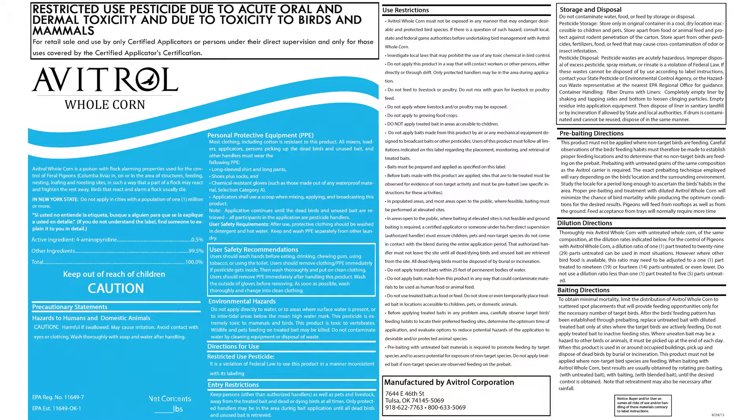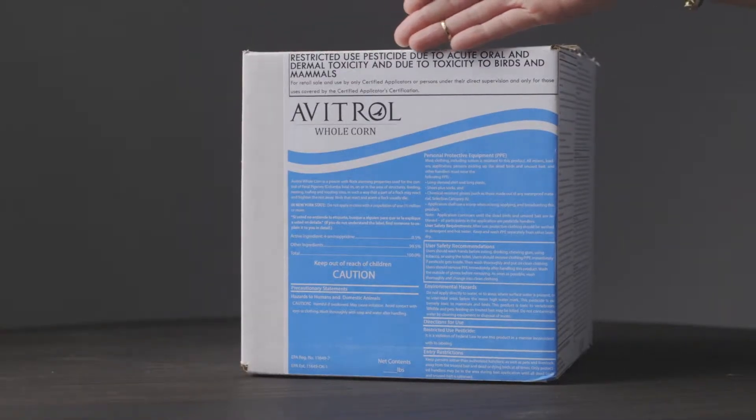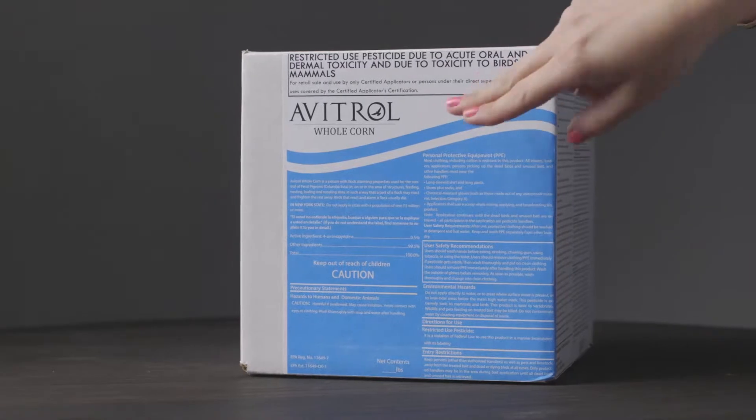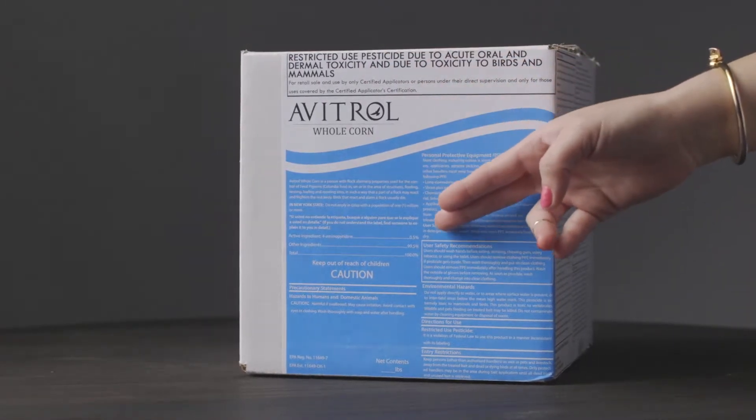The EPA label has two main parts: your front panel and your back panel. The front panel is usually organized in the following order: your RUP statement if applicable, the product name, the brand or trademark, your ingredient statements, a child hazard warning statement, your signal word — which in this case is caution — a first aid statement, and if applicable, a skull and crossbones with the word poison on it, and finally the net contents and net weight.